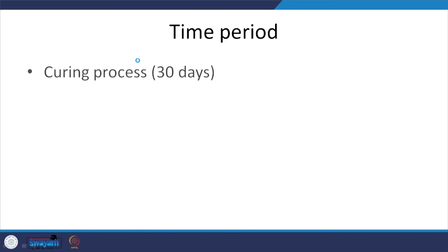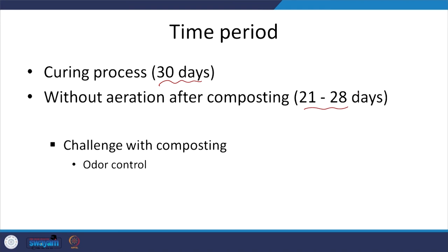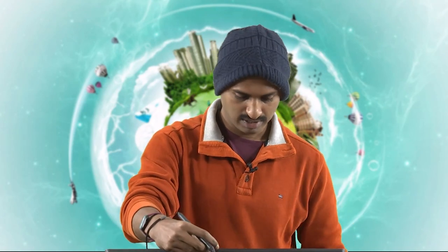Let me finish up composting and we will move on to the next session. The time period typically looked at is 30 days. Without aeration after composting that will be 21 to 28 days. A challenge obviously is odor — if composting occurs in your surroundings and you do not take care of the process it can lead to odor. That is why people typically push against composting units in their locality, but with considerable operational control you can prevent odors.